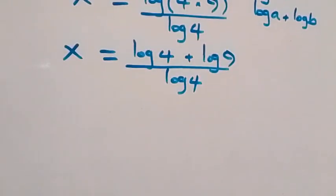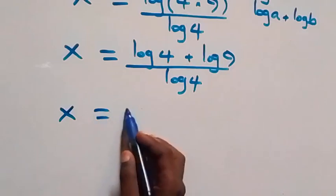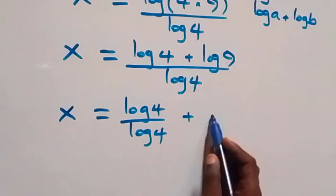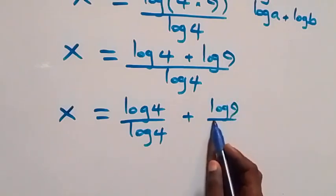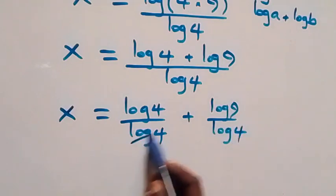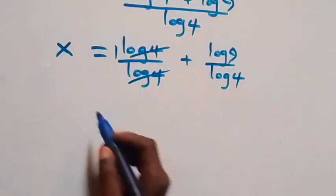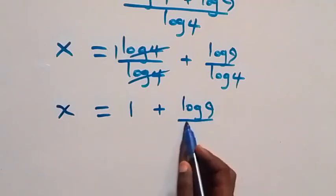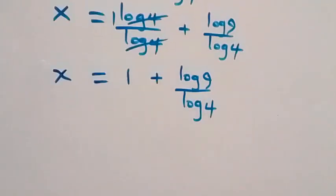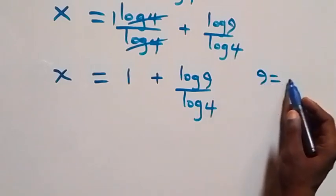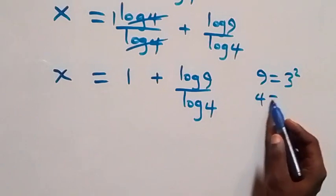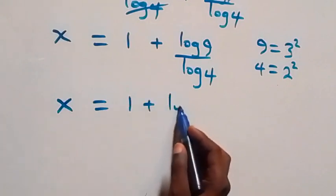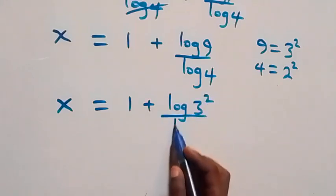From here we separate this into two fractions. This becomes x equals log 4 over log 4 plus log 9 over log 4. Log 4 over log 4 equals 1. We can also write 9 as 3 times 3, which is 3 squared, and 4 as 2 times 2, which is 2 squared. So this becomes x equals 1 plus log 3 squared over log 2 squared.